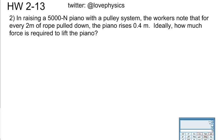Let's move on to problem number 2. Similar problem, so you're raising a 5,000-Newton piano with a pulley system. The workers note, for every two meters of rope pulled down, the piano raises 0.4 meters. Ideally how much force is required to lift the piano? So ideally means that we're not considering frictional losses.